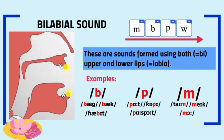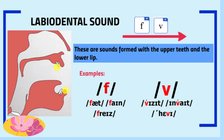Bilabial sounds are sounds formed using both the upper and the lower lips. M, B, P, and W are the letters which give us a bilabial sound. Labiodental sounds are sounds formed with the upper teeth and the lower lip. F and V are the letters which give you the labiodental sounds.